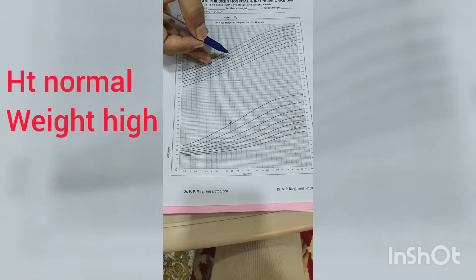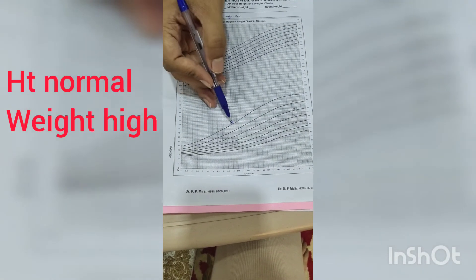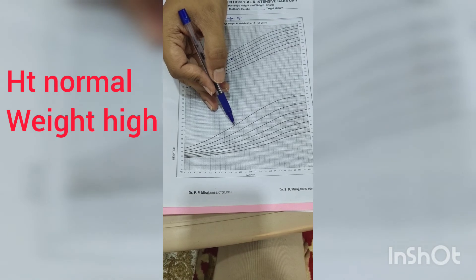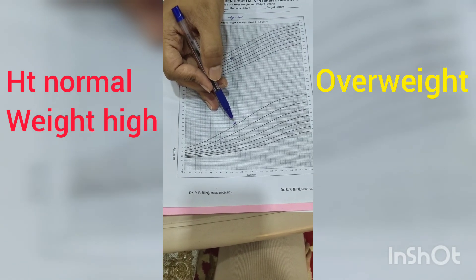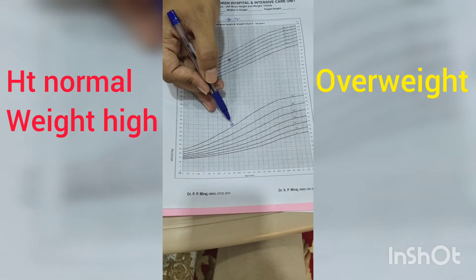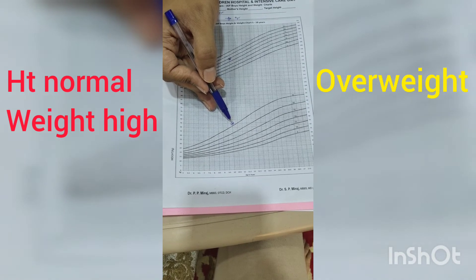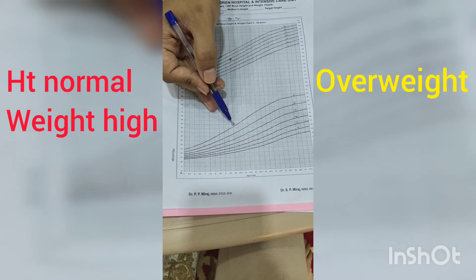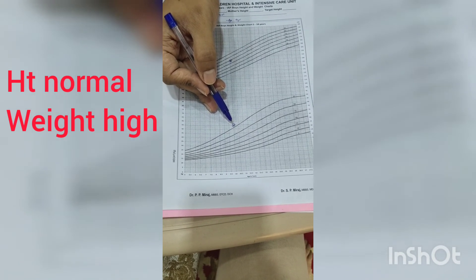Another very important case we see in our regular OPDs is a child named Yusuf, whose height is quite okay, yet his weight is way beyond the last line, which means he is overweight. Such kids' BMI has to be taken. Based on that, we can classify them as obese.